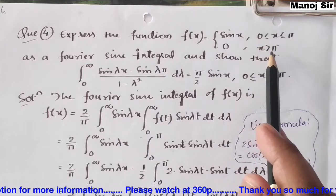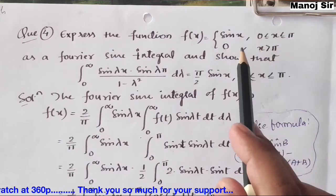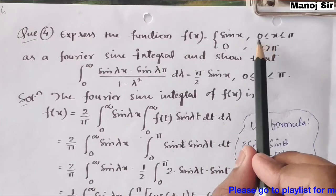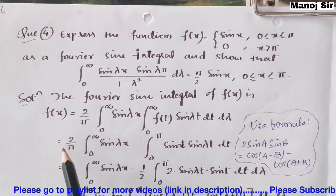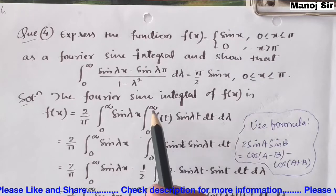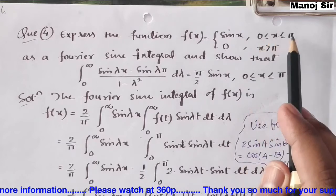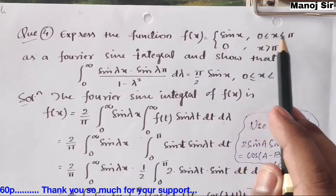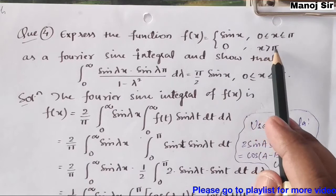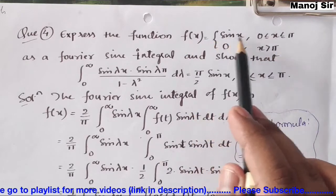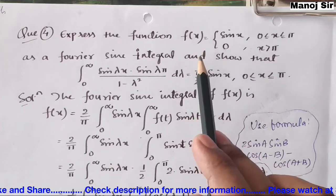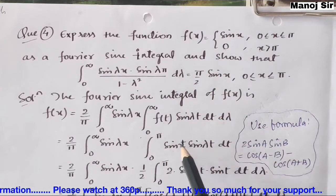Here f(x) = sin(x) for x from 0 to π and 0 for x from π to ∞. Since the function only exists from 0 to π, we take only that part. So the inner integral becomes ∫₀^π sin(t) sin(λt) dt, changing the variable from x to t.